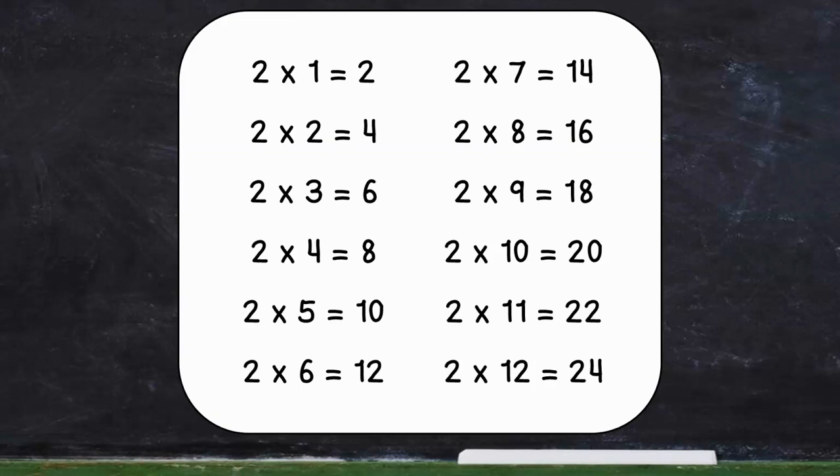I hope you noticed the pattern here that every one of the products is an even number, meaning it's 2, 4, 6, 8, or 0, no matter how high you go, and the product is always double the number that you are multiplying.